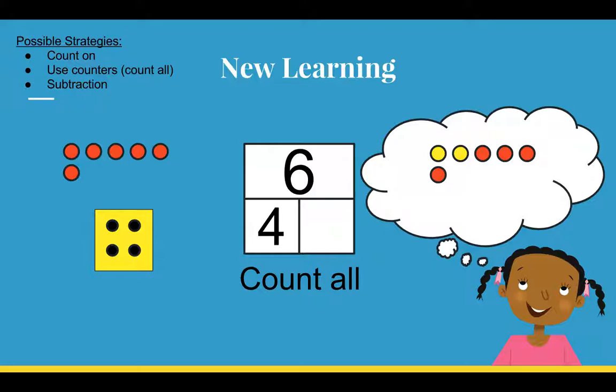3, 4. Now I have 4 yellow counters to match the 4 on my dice, which is the first part of my part-part-whole box. So I know that 1 part is 4.